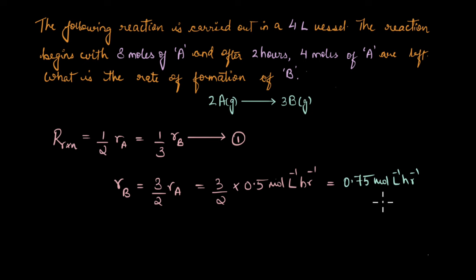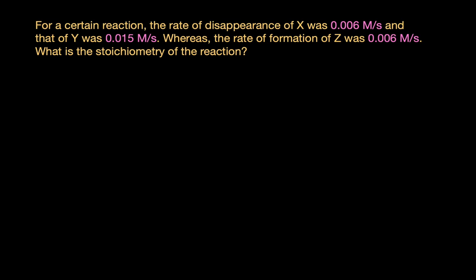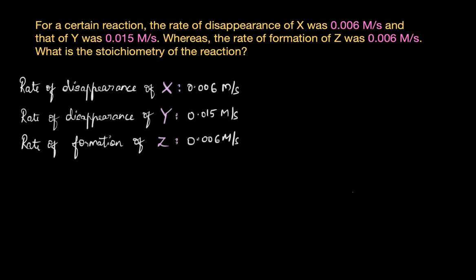Now let's look at another simple question. For a certain reaction, the rate of disappearance of X was 0.006 molar per second, that of Y was 0.015 molar per second, and the rate of formation of Z was 0.006 molar per second. Based on this information, we need to figure out the stoichiometry of the reaction. Let's write down the given rates.